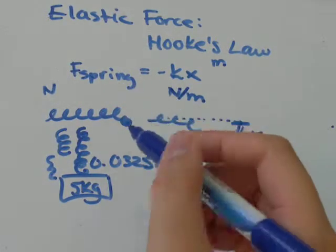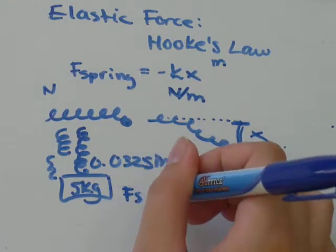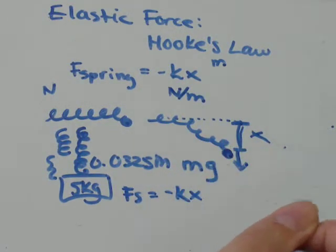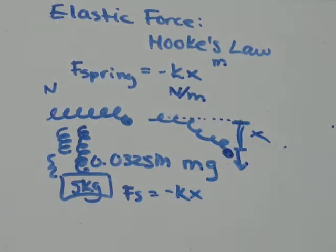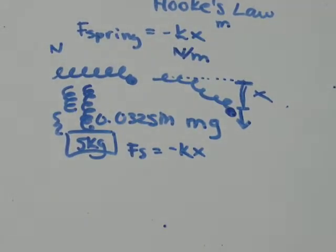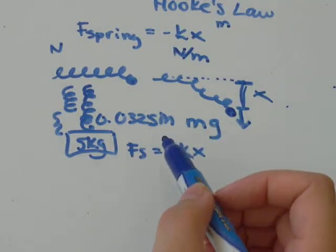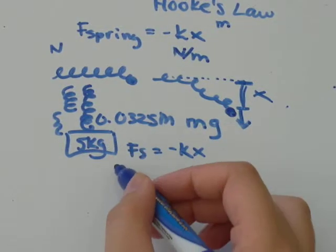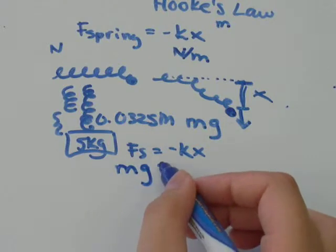So, the force on the spring is equal to negative the spring constant times the distance it's moved, or the displacement from equilibrium is the fancy way to say that. The force on the spring, in this case, because it's a vertical spring, is going to be mass times gravity.